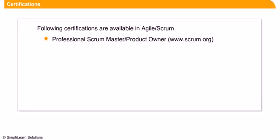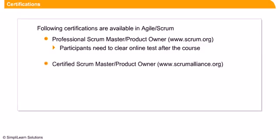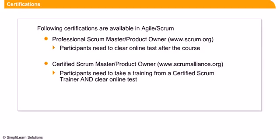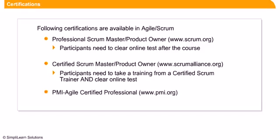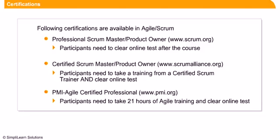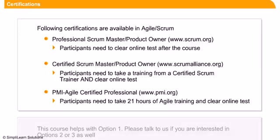The following certifications are available in Agile Scrum: Professional Scrum Master and Product Owner via www.scrum.org, requiring an online test after the course; Certified Scrum Master and Product Owner via www.scrumalliance.org, requiring training from a Certified Scrum Trainer and an online test; and PMI Agile Certified Professional via www.pmi.org, requiring 21 hours of Agile training and an online test. This course primarily helps with the first option.